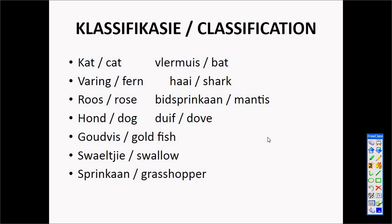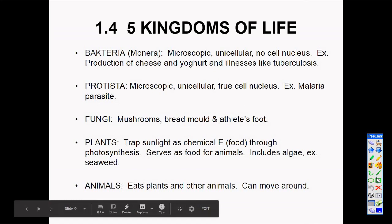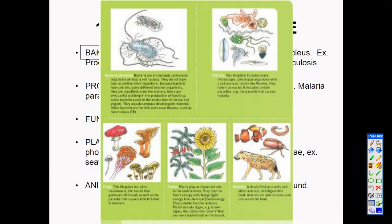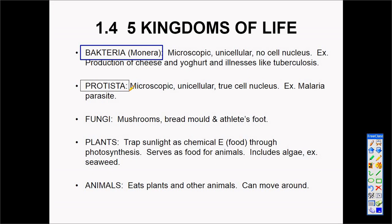There are some Afrikaans and English terms that form part of the classification system that Linnaeus provided for us. Now, all living organisms are divided into five kingdoms: Bacteria, Protista, Fungi, Plants, and Animals.